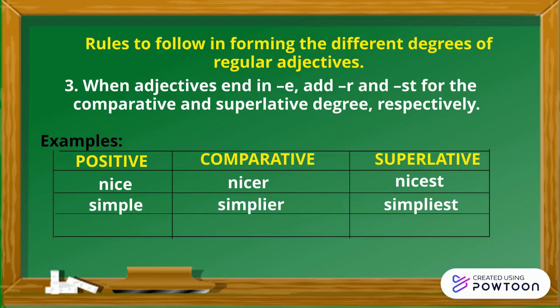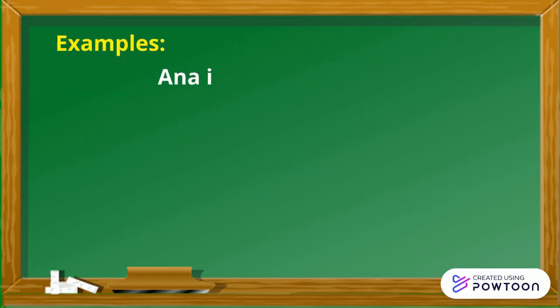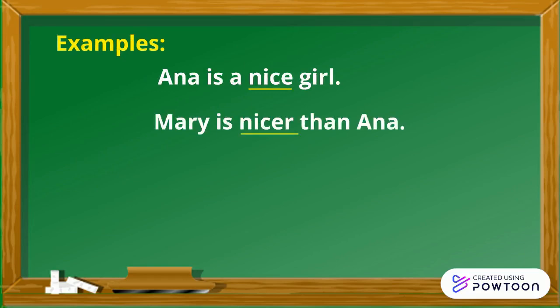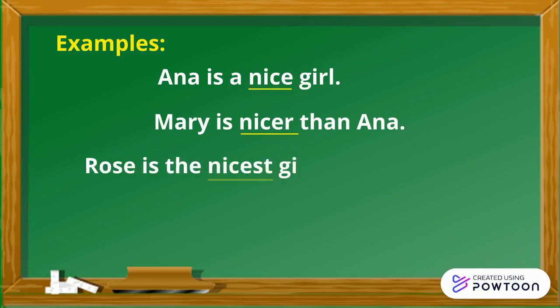Positive: wise. Comparative: wiser. Superlative: wisest. Examples — Anna is a nice girl. Mary is nicer than Anna. Rose is the nicest girl in the classroom.